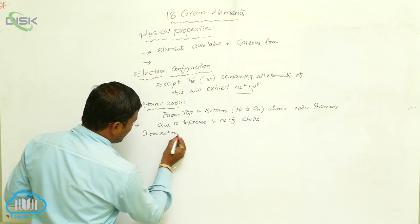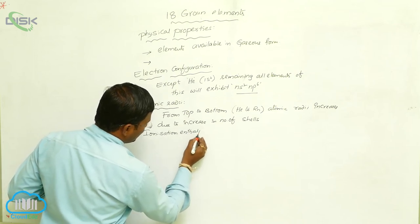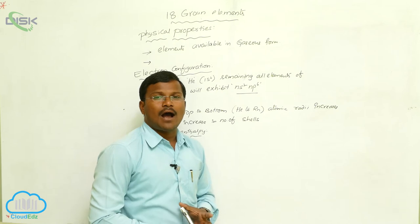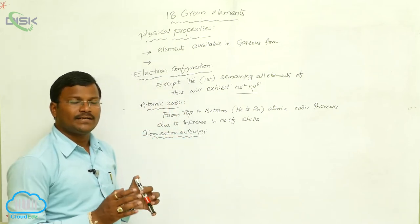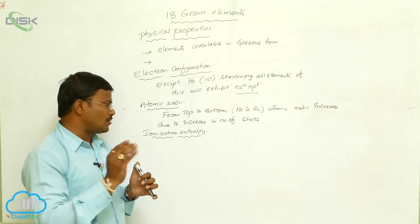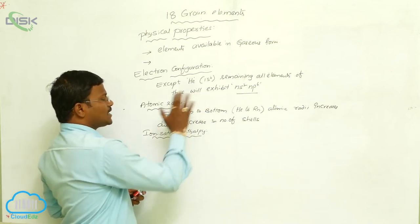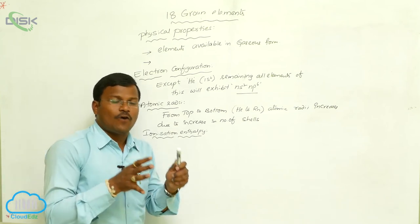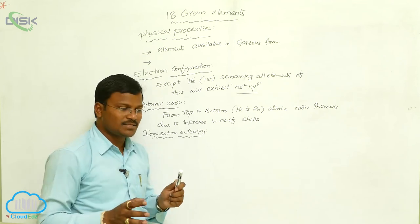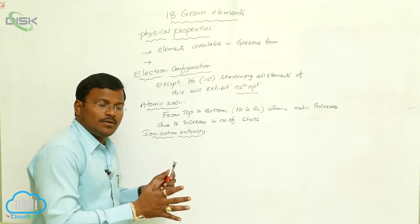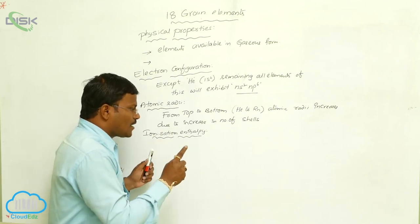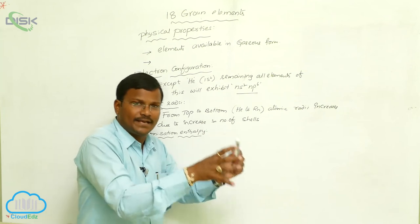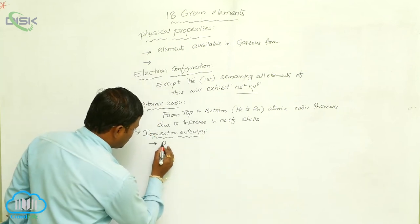Next, ionization enthalpy. As discussed previously, ionization enthalpy is the amount of energy required to eliminate an electron from the valence orbit of any atom. Since 18th group elements already have a more stable electron configuration, to eliminate any electron from their valence orbit, we have to use a high amount of energy.